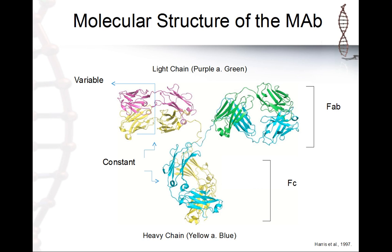Without having any pathogen in our body, we are able to produce 10 to the 12th power different antibodies in our immune system — so without any antigen activation there is really tremendous variability. There is a hinge region connecting all the parts, and we also have disulfide bridges between all the secondary and tertiary structures of the antibody.